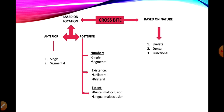If the crossbite is present in the posterior region or the buccal segments, it is classified as a posterior crossbite. Anterior crossbite is further subdivided as a single crossbite or a segmental crossbite. Posterior crossbite is further subdivided on the basis of number of teeth involved, the existence or side of the crossbite, and its extent. By number we classify posterior crossbite as single tooth or segmental; by existence as unilateral or bilateral.